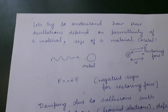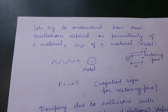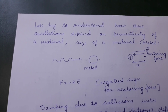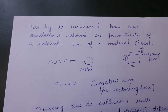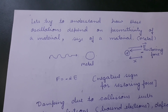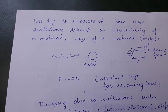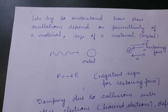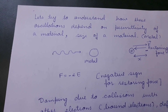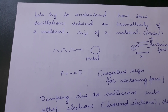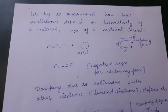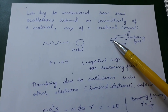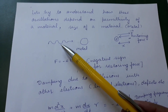Up to now we have understood that resonant oscillations of conduction electrons is called plasma resonance, and these are plasma oscillations. Now let us try to understand how these oscillations depend upon the permittivity of a material and the size of a material. We know that if a photon is incident on a metal, then the electron cloud of the metal will vary according to the oscillating electric field of the photon, and if the electron cloud starts oscillating with respect to the applied electric field,